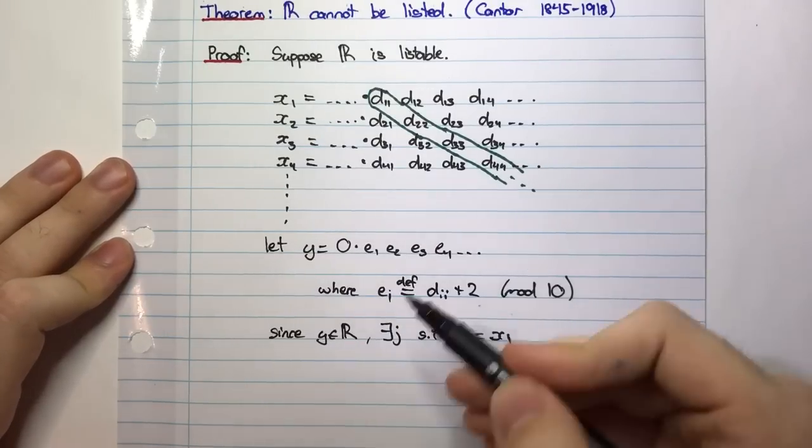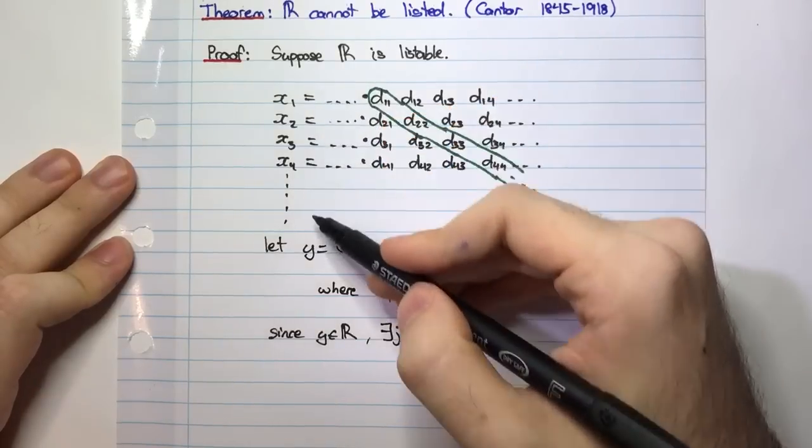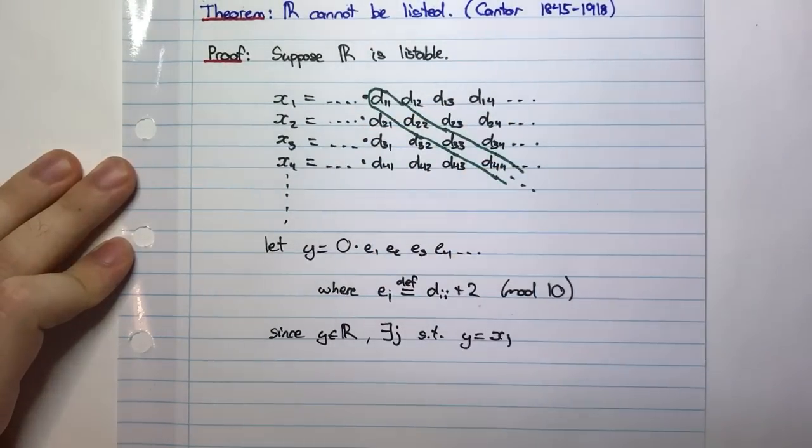If Y is real, which it is, since Y is real, then there has to be some J where I can find the XJ in this list here.